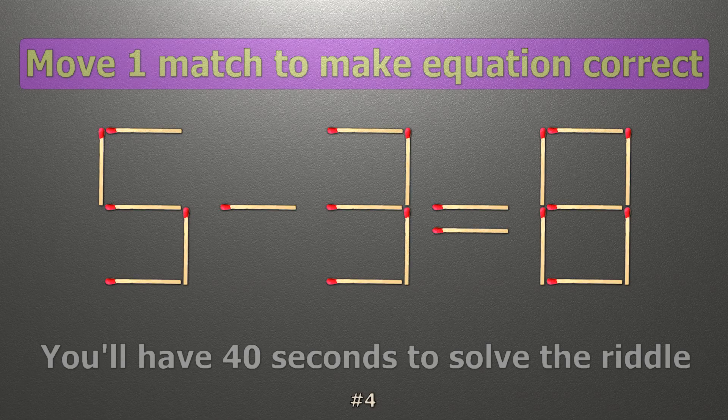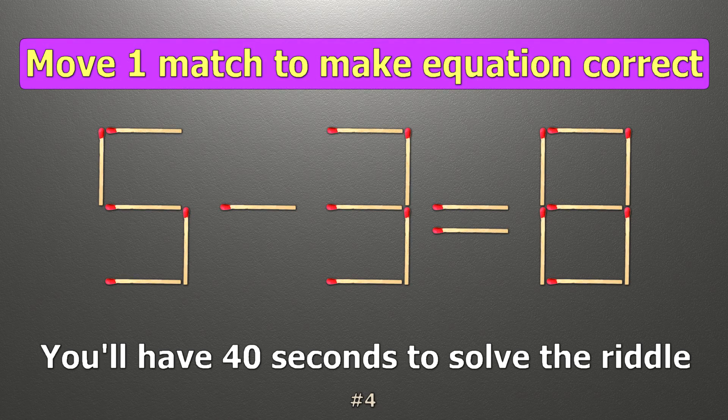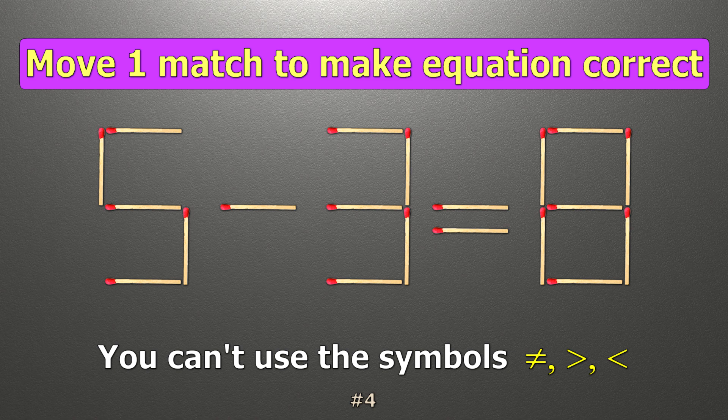We have the equality 5 minus 3 equals 8. Our equality is wrong. We need to move one match to make our equality correct.